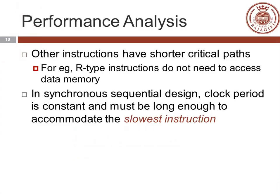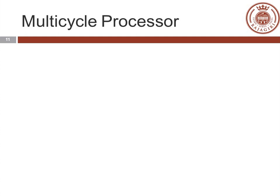In single-cycle sequential design, the clock varies constant and must be low enough to accommodate the slowest instruction. In this particular architecture, we will be selecting the clock time required for the LW instruction. Now we will be seeing data path development for multi-cycle processor for LW, SW, and R-type instructions.